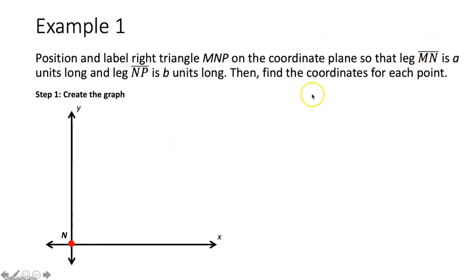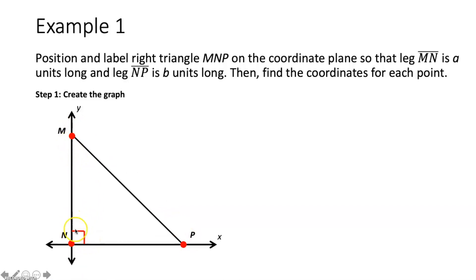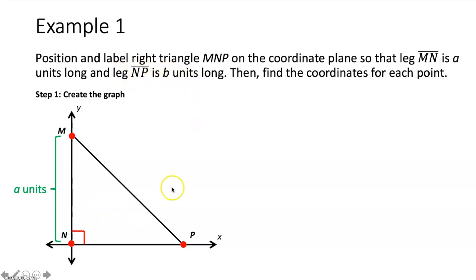N is going to be the point we place at our origin, 0, 0. The two legs are MN and NP, which makes MP the hypotenuse of this right triangle. So we put M here and P here. These have to be the legs, and segment MP has to be your hypotenuse, meaning angle N is your right angle. I have created my triangle where segment MN and segment NP are the legs.